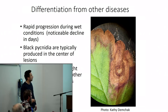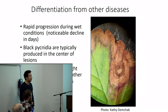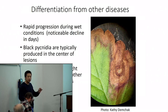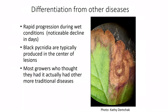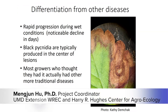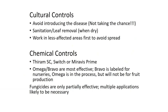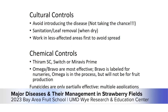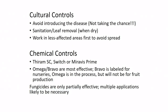This is what it looks like when it infects strawberry leaves — rapid progression during wet conditions. It's also a warm and wet disease. You can oftentimes observe black pycnidia in the center of the lesion, which progresses really fast. Sometimes this symptom is confused with other traditional leaf and foliage issues. For cultural controls, you want to avoid introducing the disease in the first place. If you find it, do some sanitation — remove infected plants or leaves under dry conditions, and work in less-affected areas first to avoid spread.